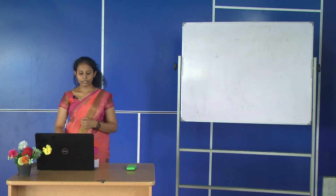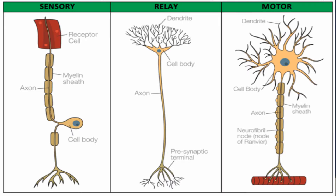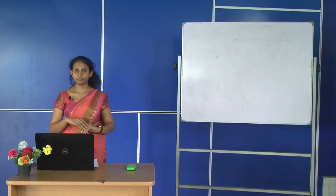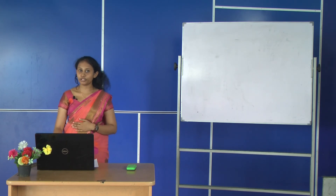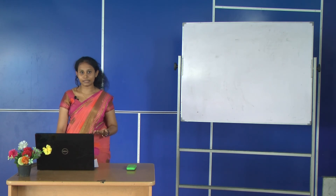Now let's see what are the main types of neurons: one is the sensory neuron, then the relay neuron, and finally the motor neuron. The sensory neuron carries the impulse from the sensory organ towards the central nervous system. The relay neuron stays at the central nervous system and transfers the impulse from the sensory neuron to the motor neuron. Finally, the motor neuron carries the impulse from the central nervous system to the effector.